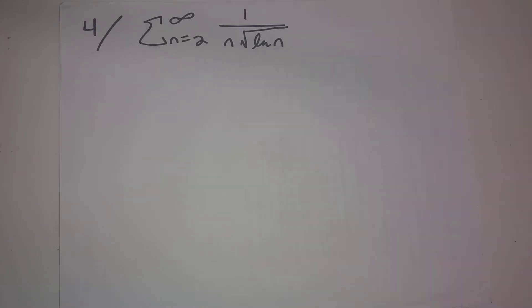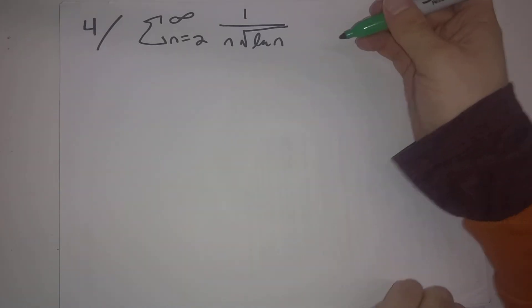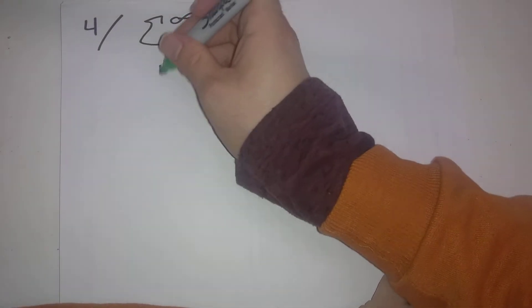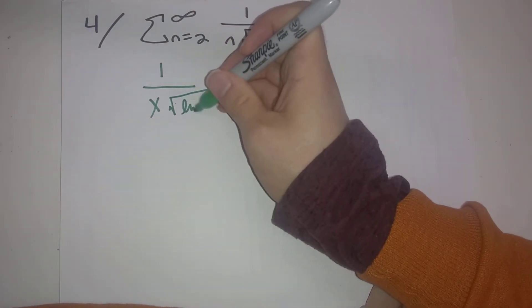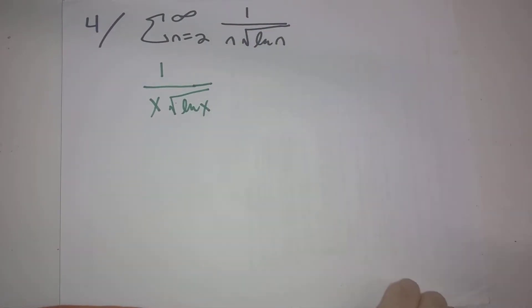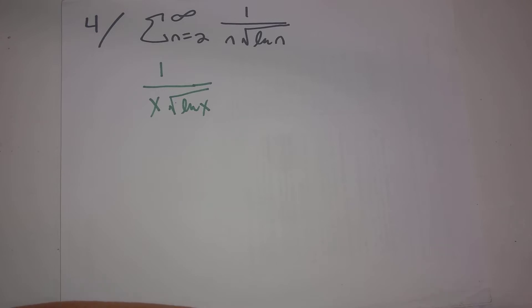The thing that catches my eye is that if I were to replace n's with x's and look at x times the square root of natural log to the x, this is something that feels like it can be done using the integral test because this would be an integral that we can evaluate.